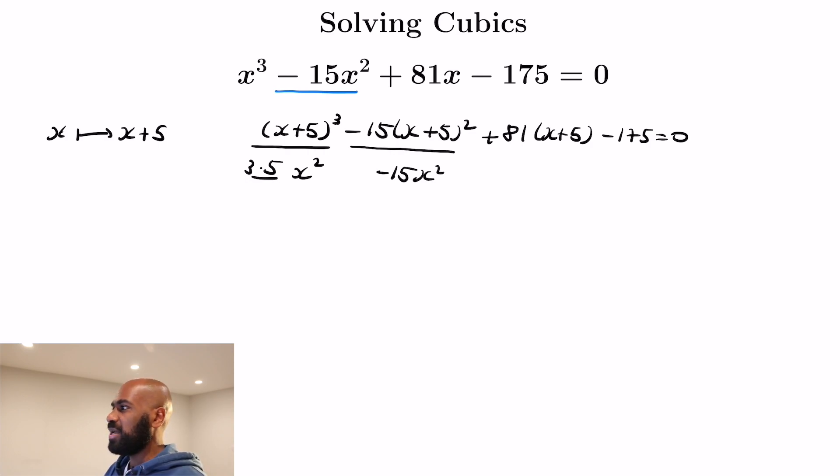Whereas in the next term we have a minus 15x squared, so these two cancel each other out. So in general we'd be shifting by the negative of the squared coefficient divided by 3.